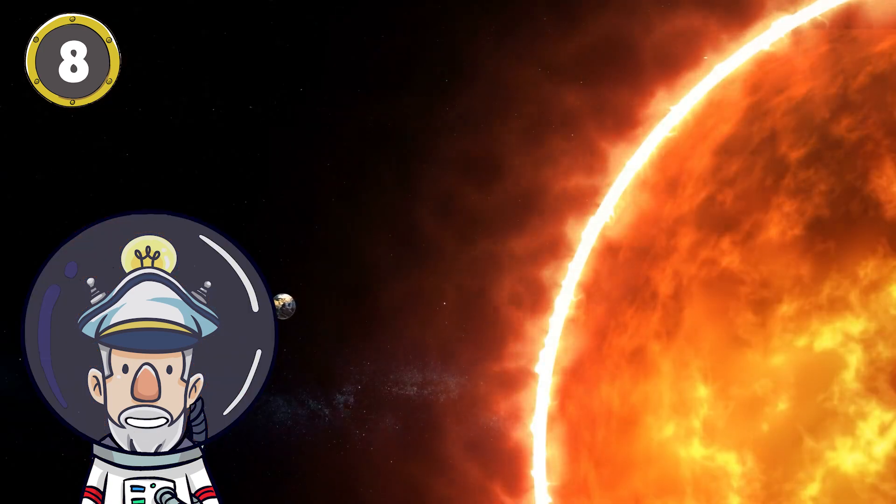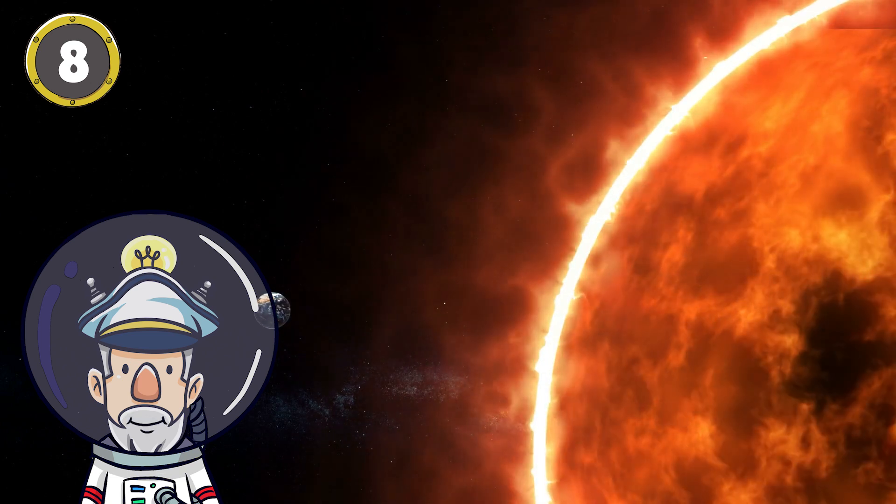Number 8: The Sun has a mass of around 330,000 times that of Earth.